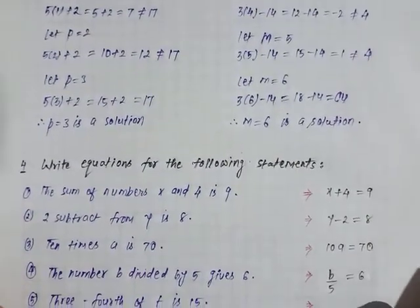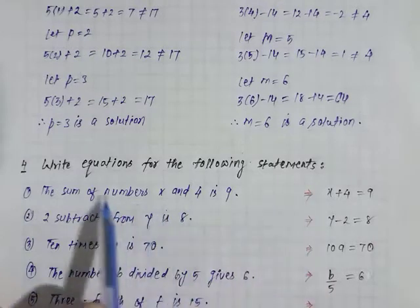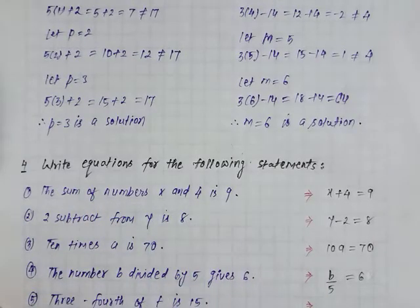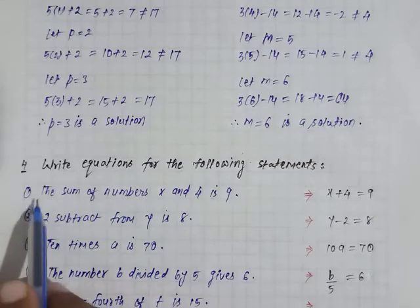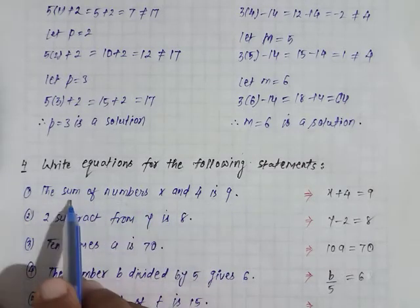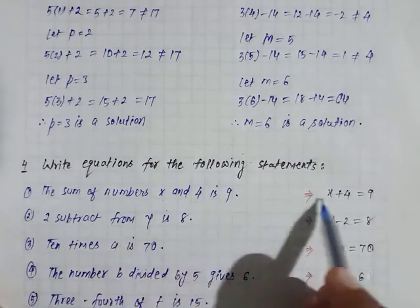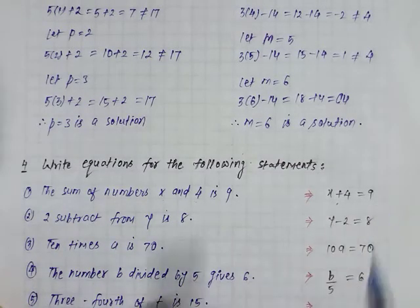Next, write equations for the following statements. We are going to convert statements into equations. First, the sum of numbers x and 4 is 9. Sum means plus. So x and 4 plus equals 9. The equation is x plus 4 is equal to 9.